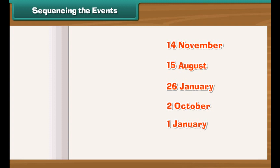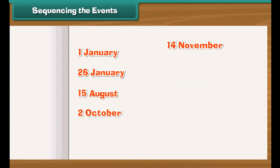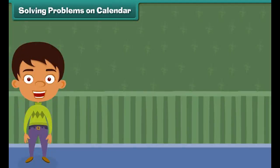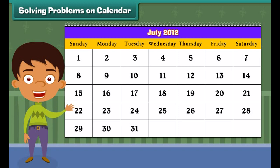Sequencing the events. Anu is at school. She has listed some important dates in a jumbled manner. Let us help her in arranging the days in the order they come in the year. It's New Year, then Republic Day, then comes Independence Day, followed by Mahatma Gandhi's birthday, and lastly Children's Day, which is the birth date of our first Prime Minister Pandit Jawaharlal Nehru.